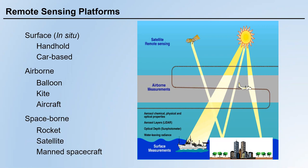The first is called surface platform or in-situ platform. Usually, we use handheld or car-based equipment to collect spectral information of different ground objects.